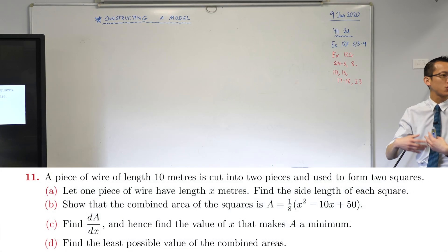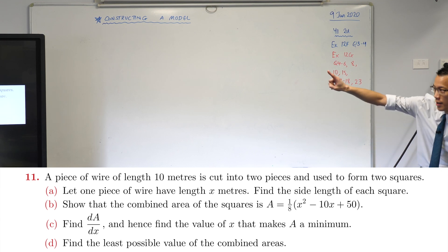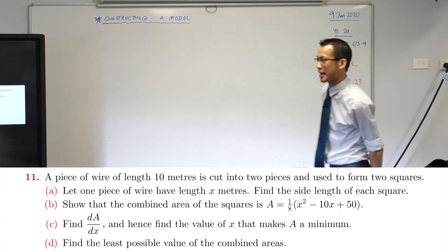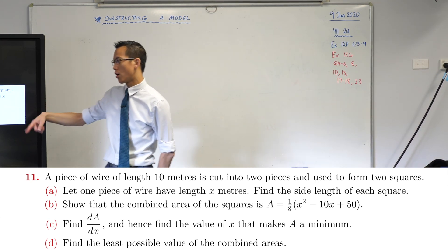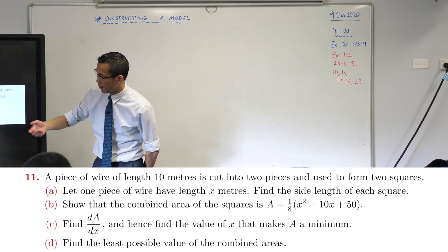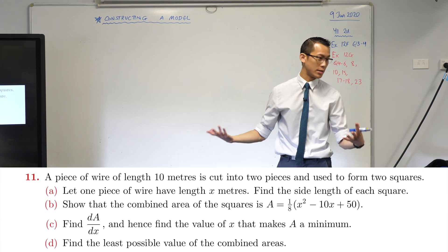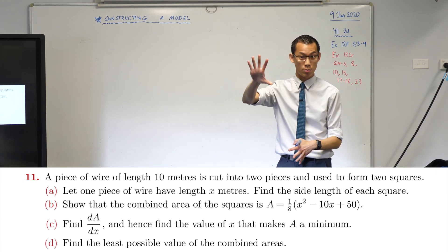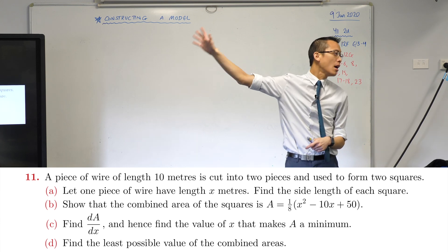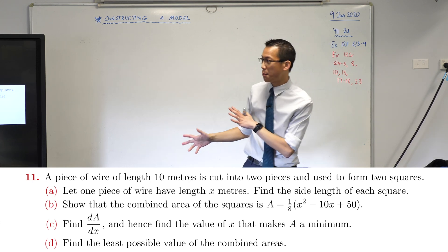We have a situation here where we are trying to optimize, and you know that because if you skip right to the end you can see it says find the least possible value of the combined areas. Whenever you hear 'I want the least of this' or 'I want the most of this,' that's an optimization problem.